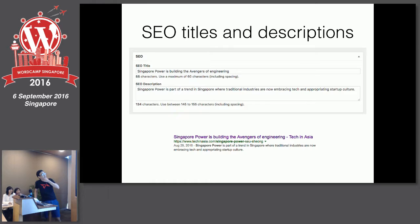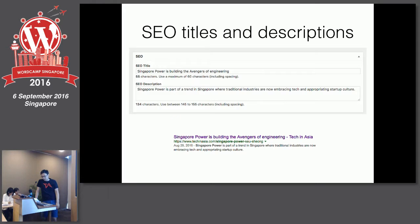For SEO best practice, we also keep our meta description within 145 to 155 characters. That's why sometimes the headline on our website is actually very different from the headline on Google — we want to make sure it's short, concise, and contains the right keywords.